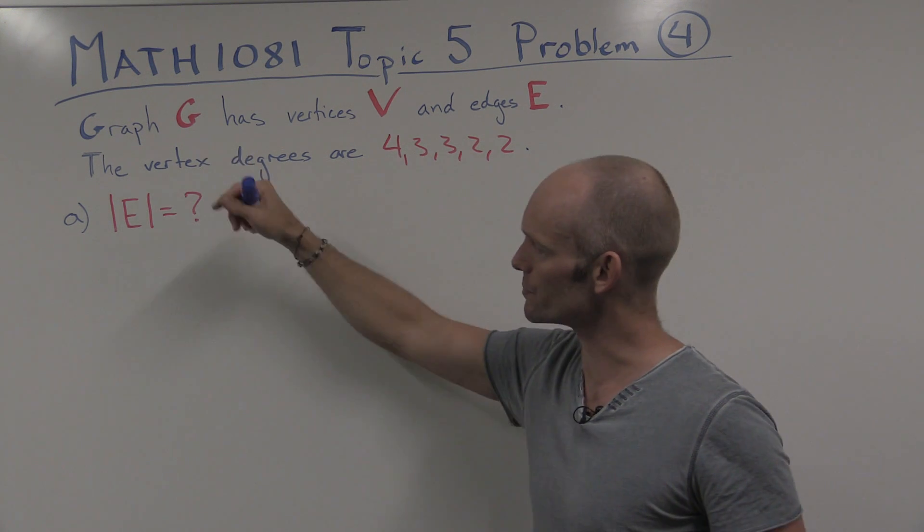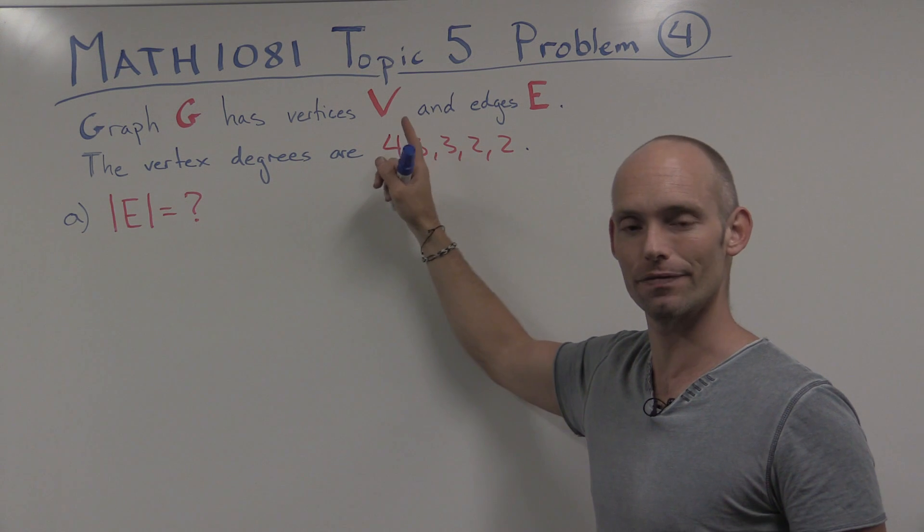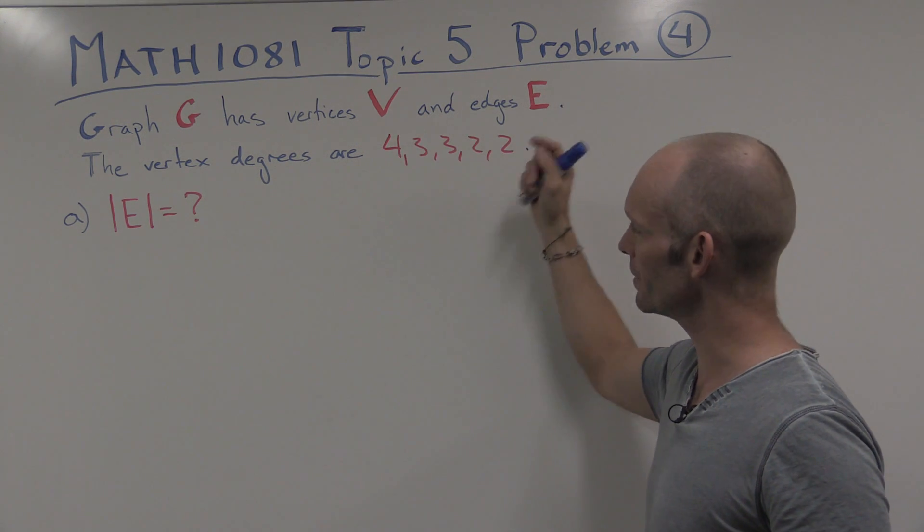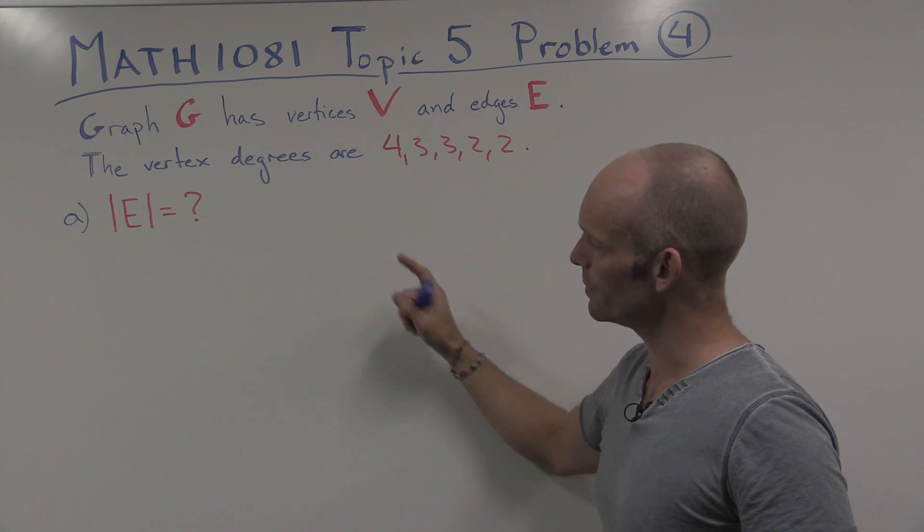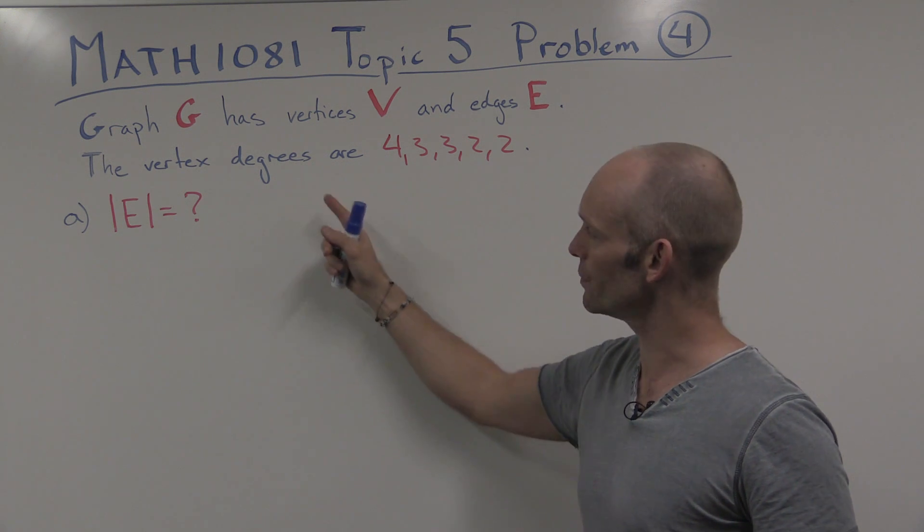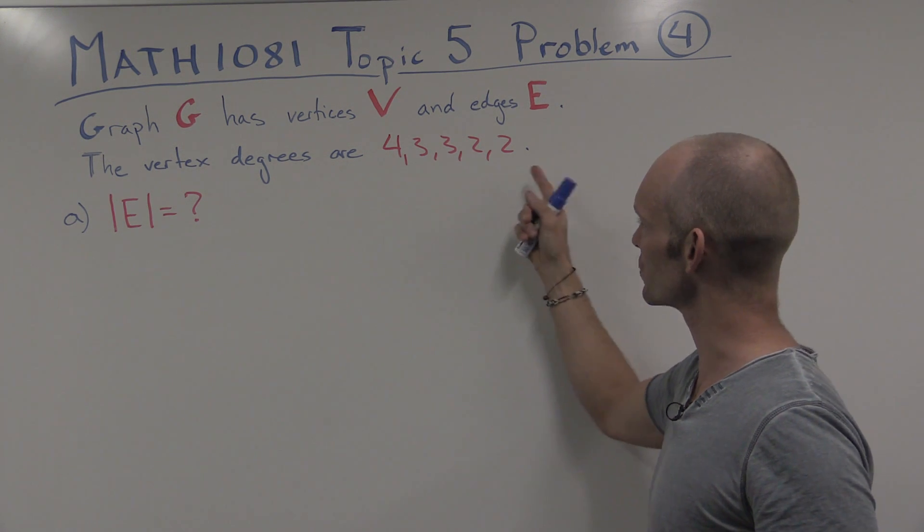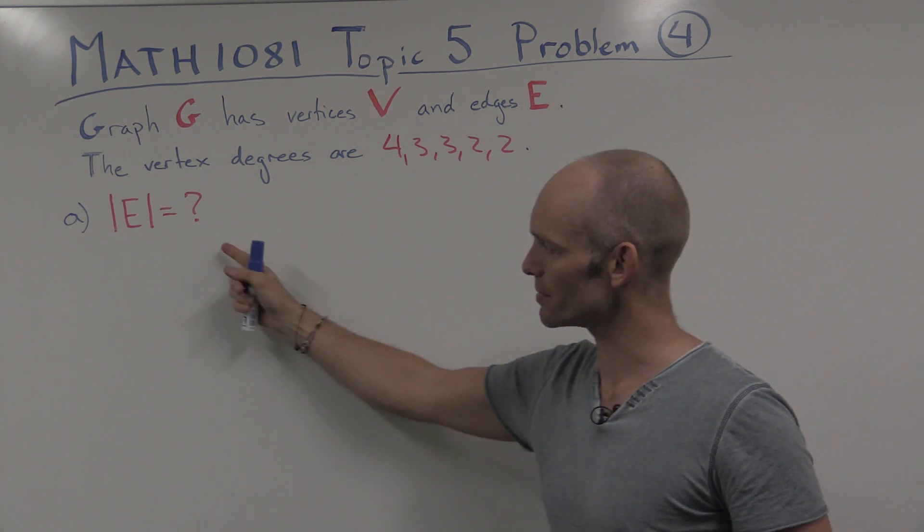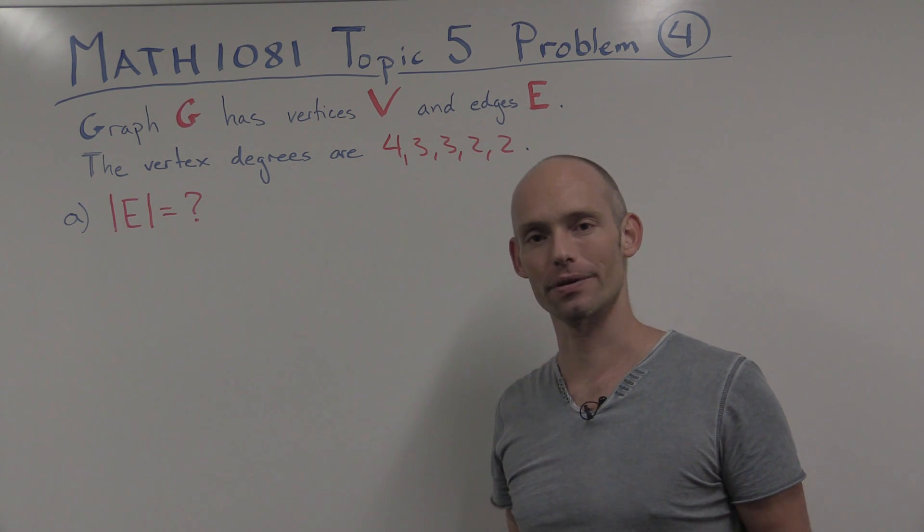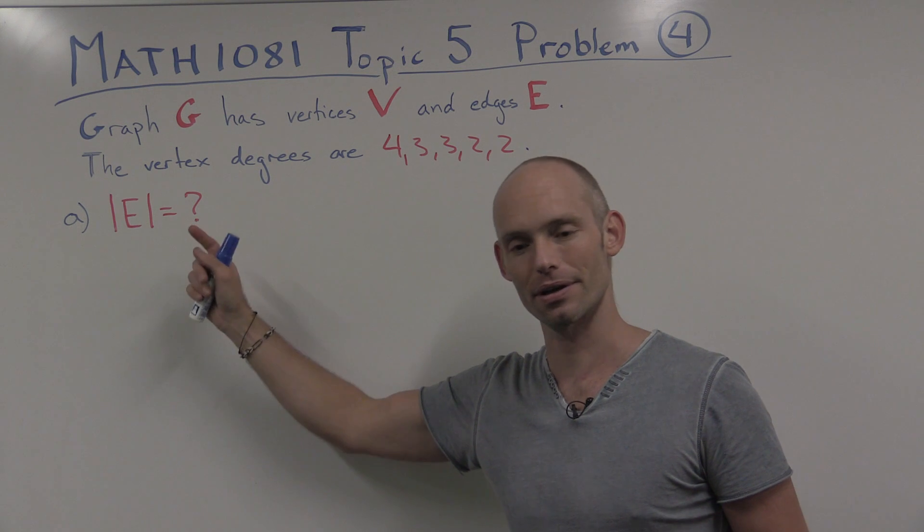This problem deals with the graph G, with vertex set V and edge set E. And for this graph, we're told that the vertex degrees are as follows: 4, 3, 3, 2, 2. And then we're asked to find out how many edges are there in the graph, what's the size of this edge set.